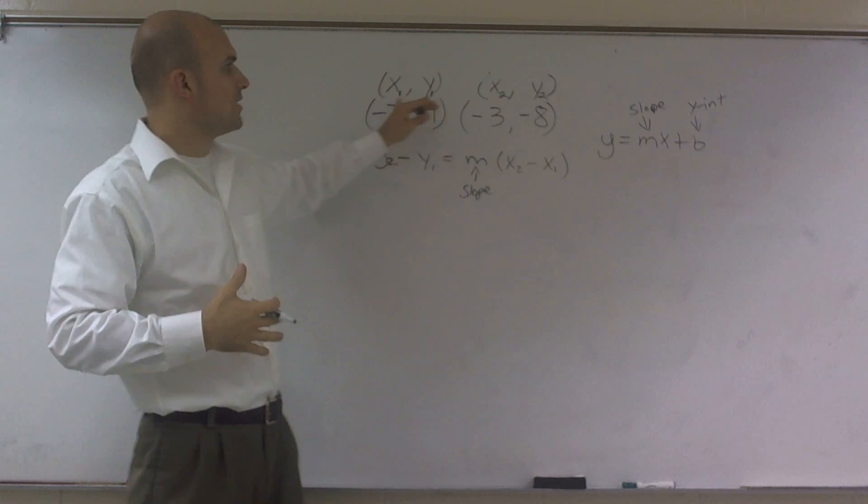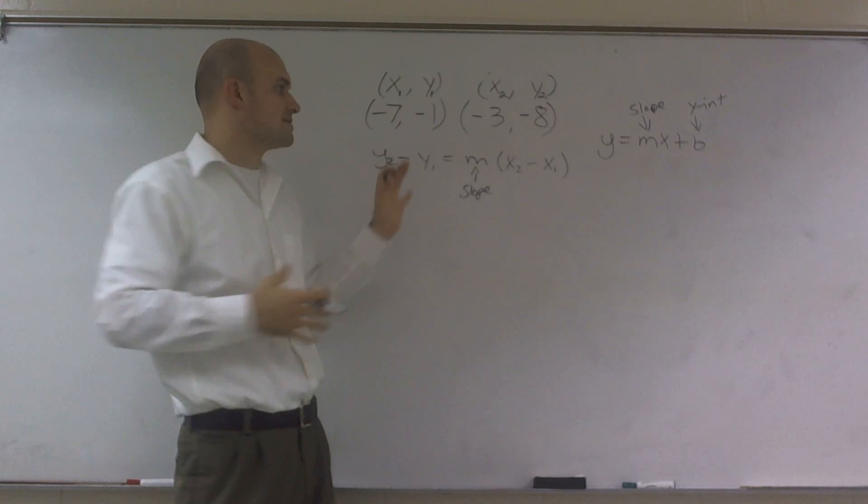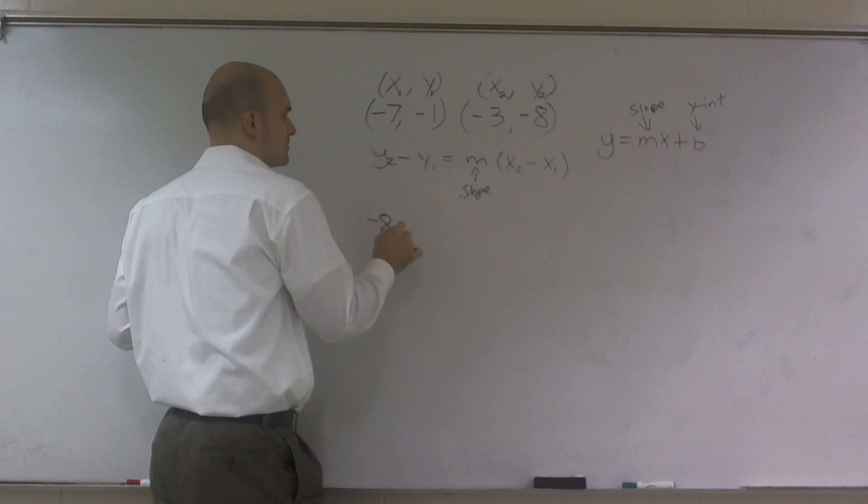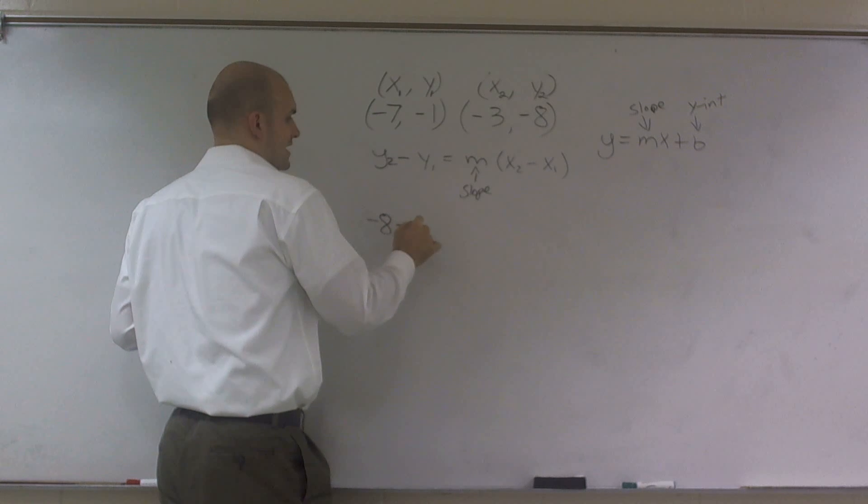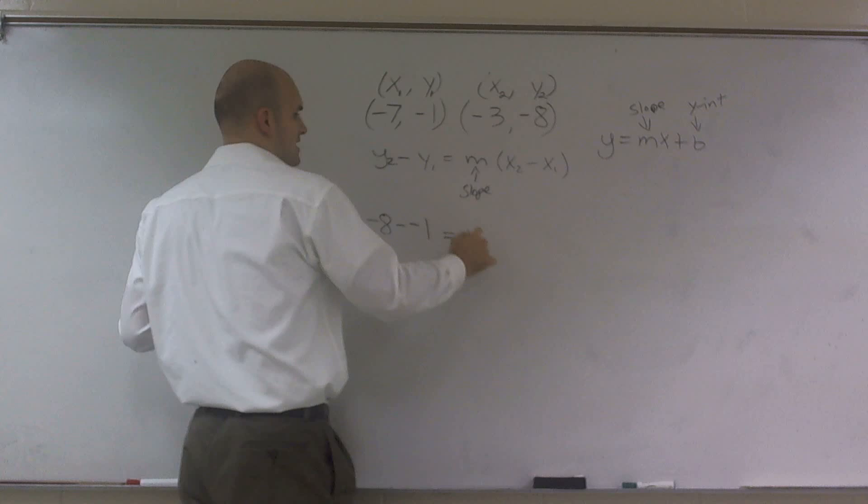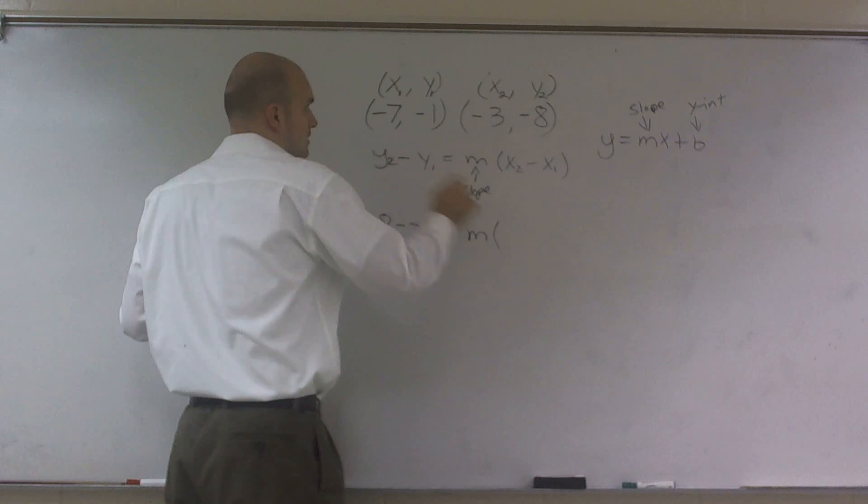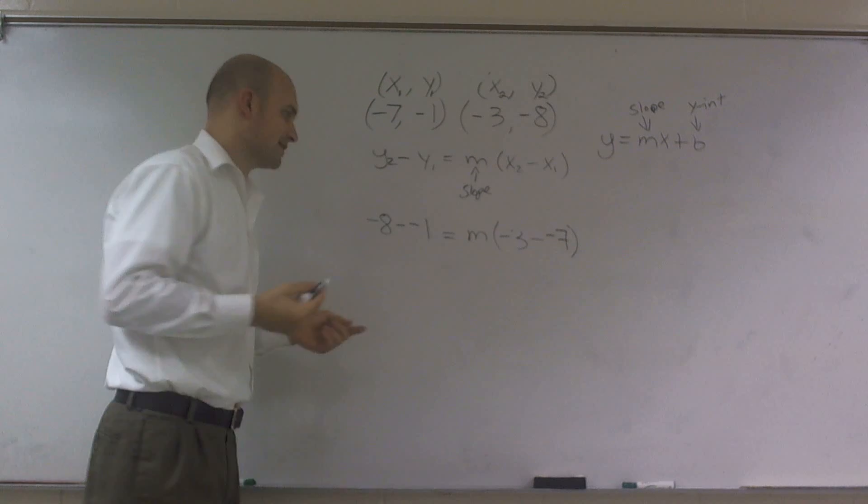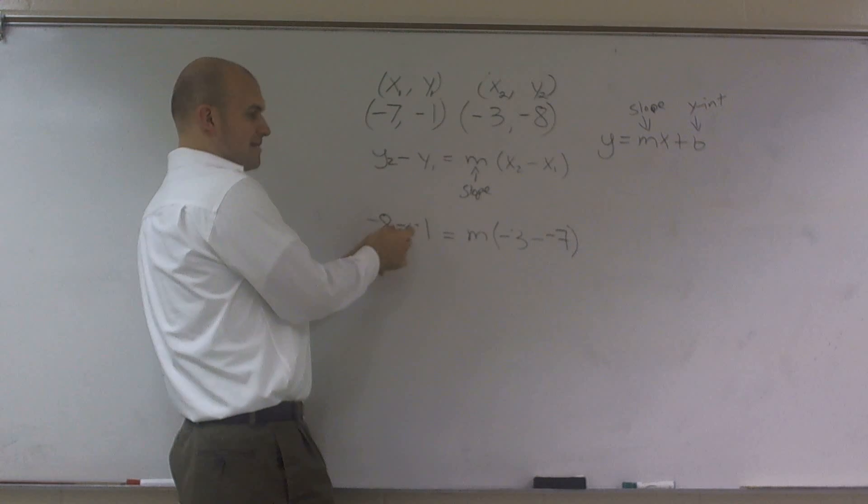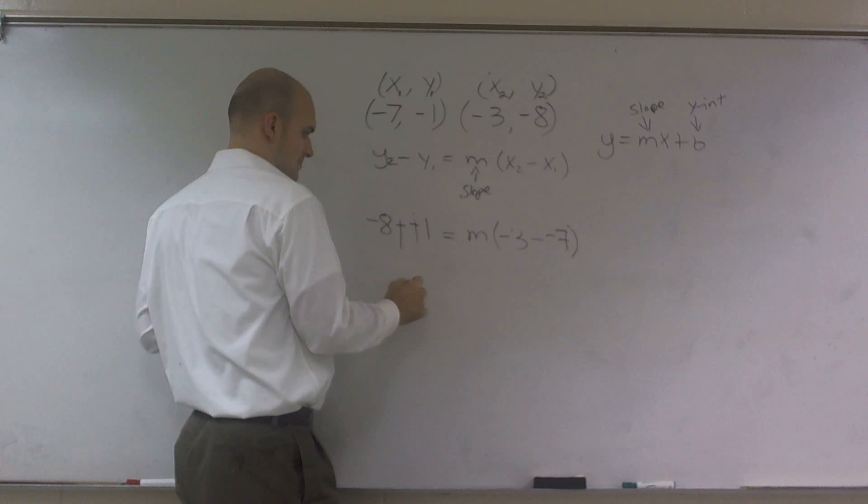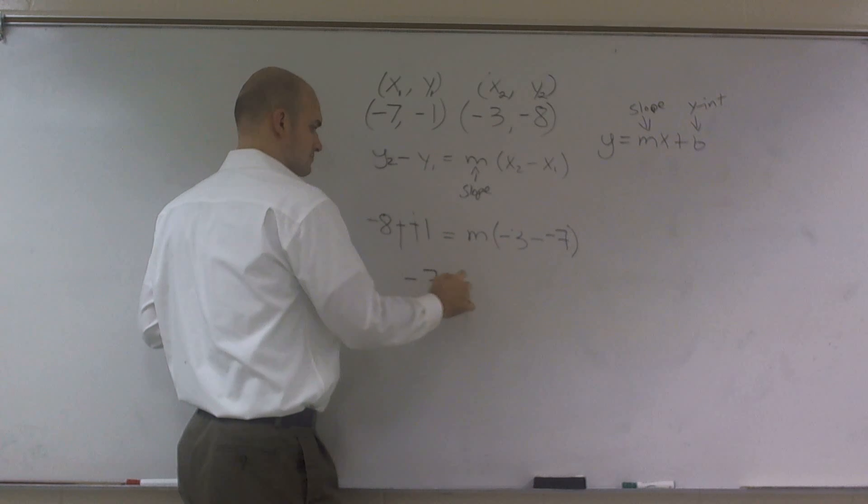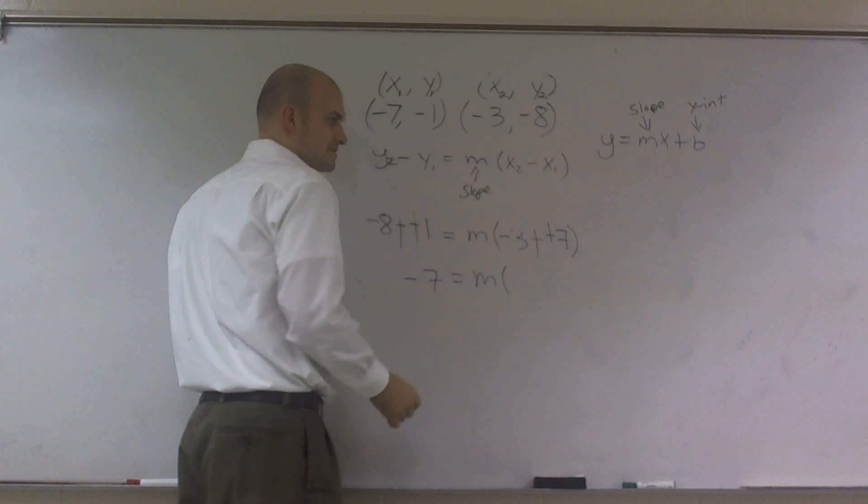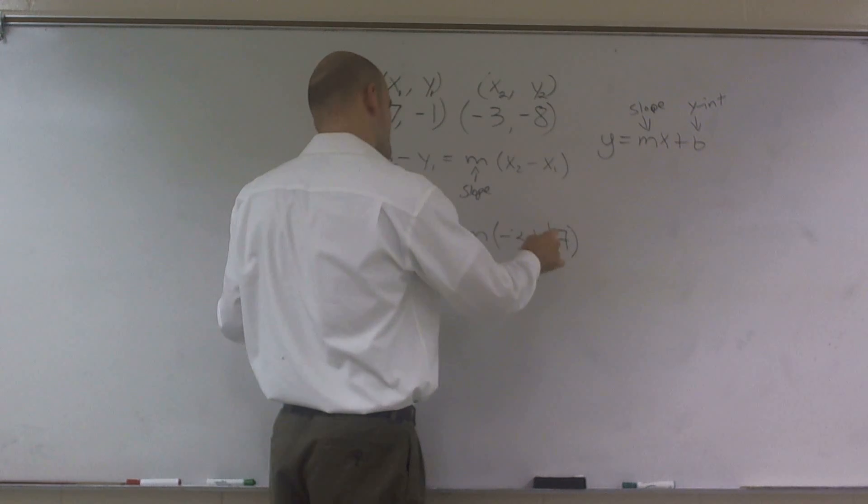So what I can do is now, if you can understand that you have two x's and two y's, I'm going to plug in those two x's and y's into this equation. So therefore, I have a negative 8 minus a negative 1 equals m times negative 3 minus a negative 7. Then what I can do is I can simplify this. Negative 8 minus a negative 1 is going to give me a negative 7.